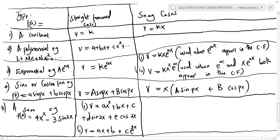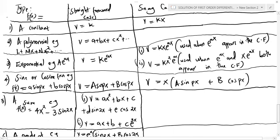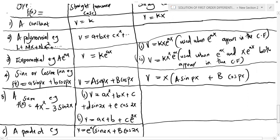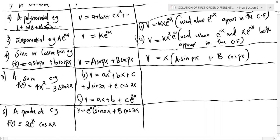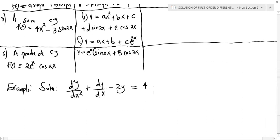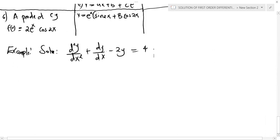Note the values in this table. If f(x) is a constant, we use an assumed PI of k. If it's a polynomial, and so on — those are the different values of the assumed PI. Now let's take up an example.